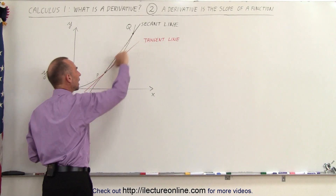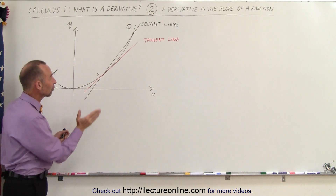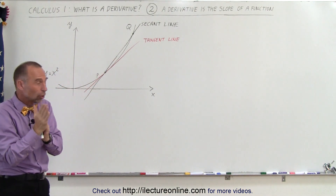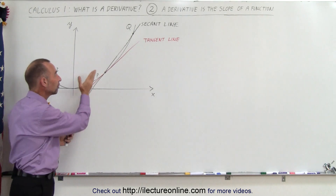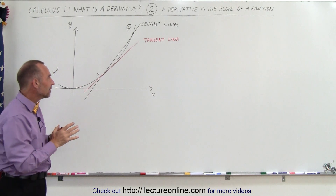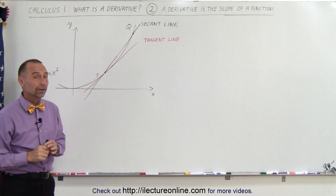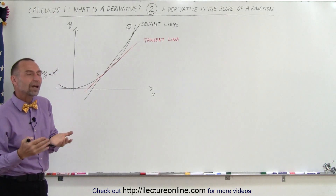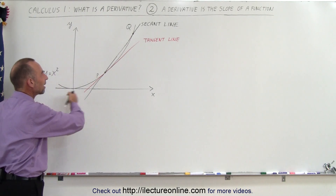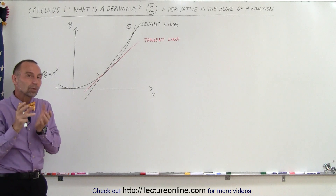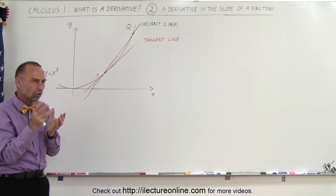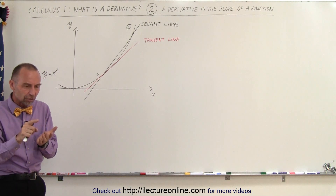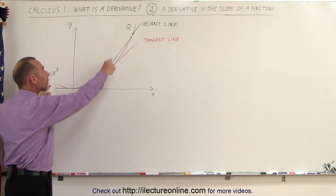I also drew a tangent line at the point p. We can see that the slope of the tangent line equals the slope of the function at point p, because at that point the slope of the tangent line is exactly equal to the slope of the function. So the slope of a function will be another function called the derivative, which helps me find the slope anywhere along this line.